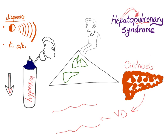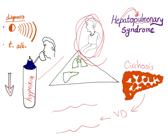In this patient, you will also have something called platypnea-orthodeoxia. Platypnea is dyspnea that occurs when the patient sits down, and this dyspnea may disappear when they lie back down on the bed. Orthodeoxia refers to hypoxia occurring in the sitting position, so the condition is named platypnea-orthodeoxia.